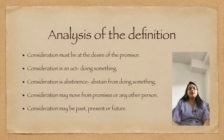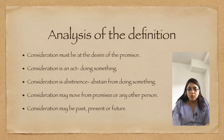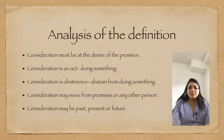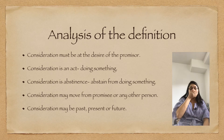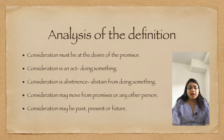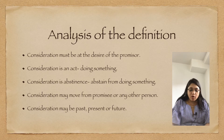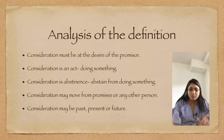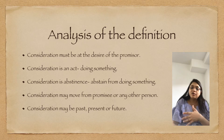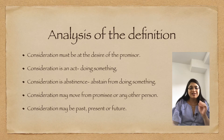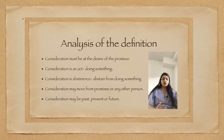The next point is: consideration may move from the promisee or any other person. If A offers B 'I want to buy your car for rupees five lakh,' those five lakh rupees can be paid by B, or they can be paid by any other person on behalf of B. Suppose B has a friend who will pay rupees five lakh on B's behalf — that is also a valid consideration. We will cover this in more detail in the next video, as it is a big topic.